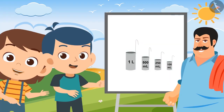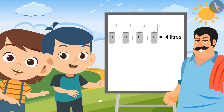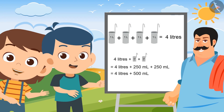Brother, which vessel will you use to give four and a half litres of milk? I will use the one litre container four times to measure four litres of milk and the 500 ml container to measure the remaining half litre of milk. You can also measure by using the one litre container four times and the 250 ml container two times.